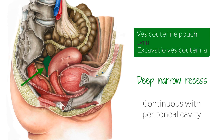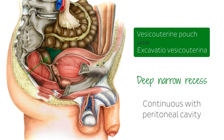Now, for comparison, in the male pelvic cavity, the vesicouterine pouch and the recto-uterine pouch are obviously both absent, but in their place lies a different space called the recto-vesical pouch between the urinary bladder and the rectum, and this is also lined by peritoneum.